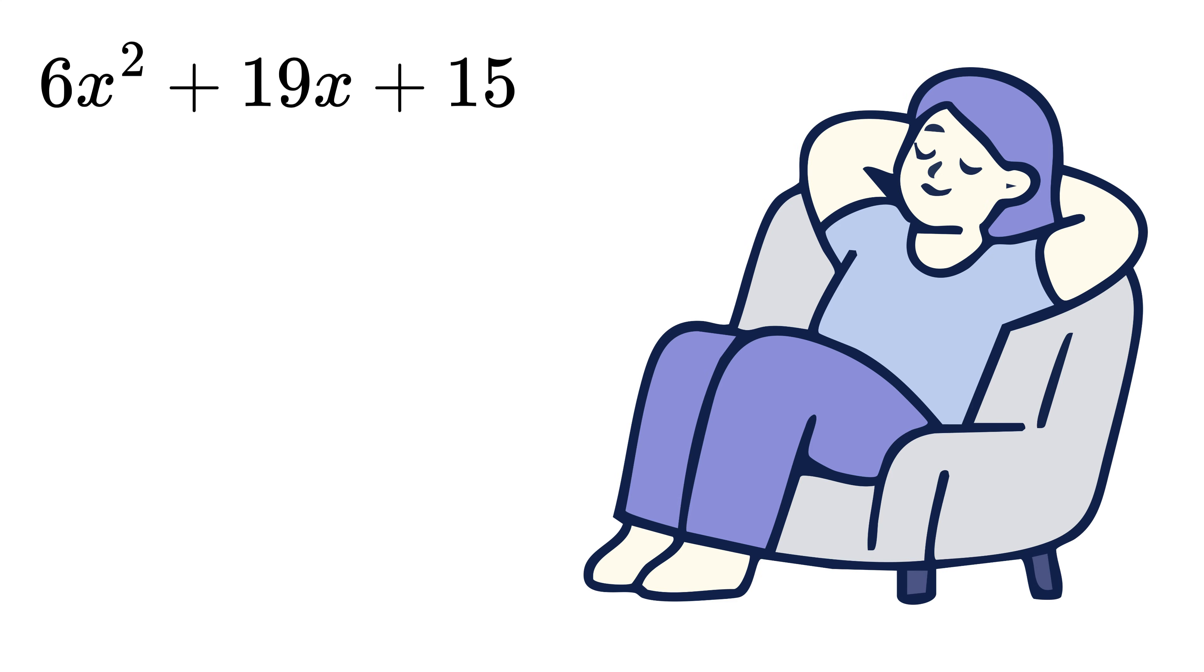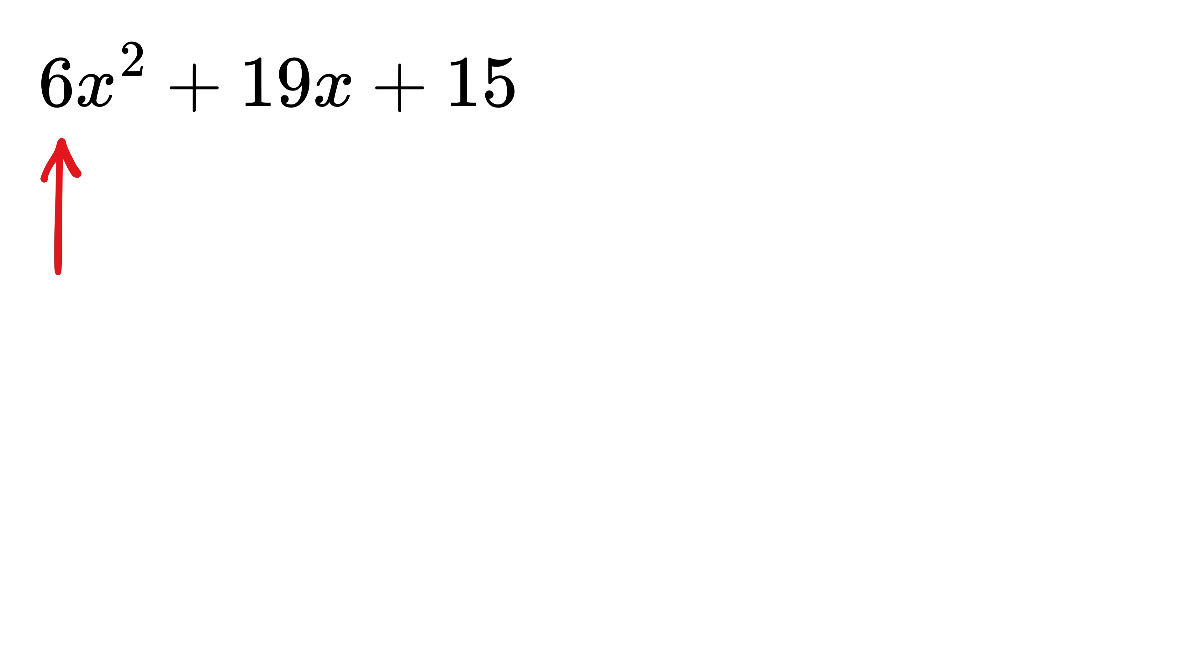Step 1 is to multiply the coefficient of x squared, or this 6, with the constant value, or this 15. This gives us 90, right?